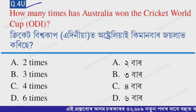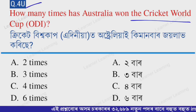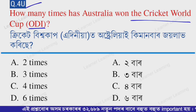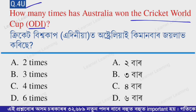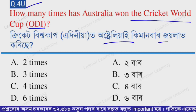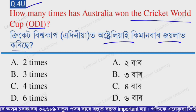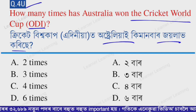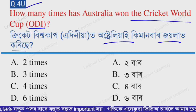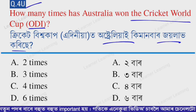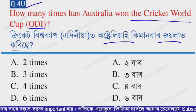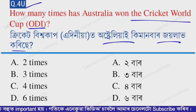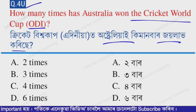Next question for you — answer this one in the comments: how many times has Australia won the Cricket World Cup? Option A is two times, B is three times, C is four times, and D is six times. Which option is correct? Let us know in the comments below.